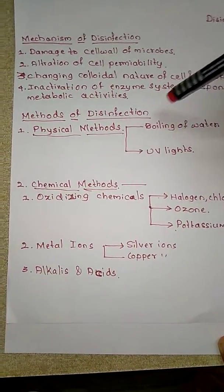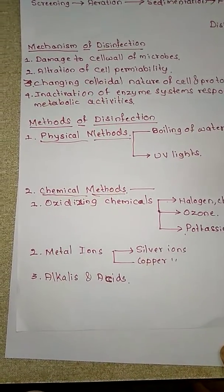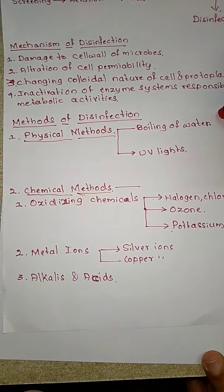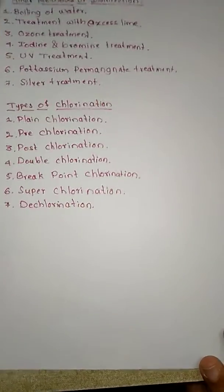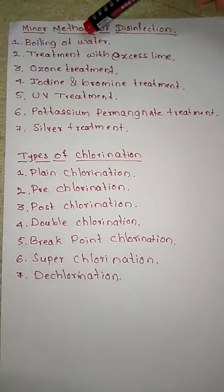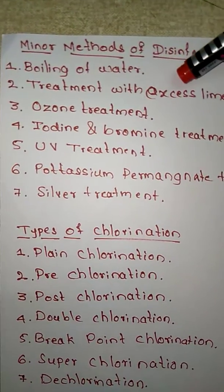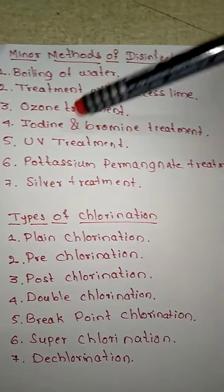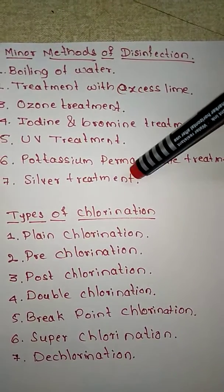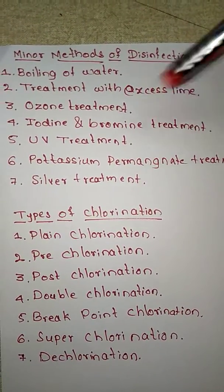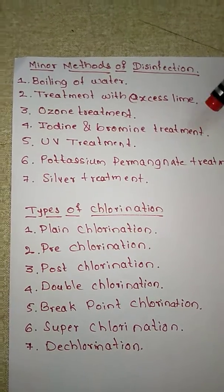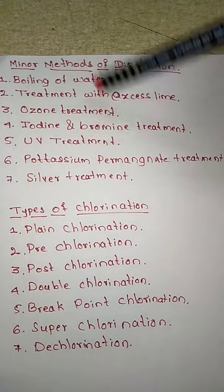All these fall under minor methods of disinfection. The minor methods include boiling of water, excess lime treatment, ozone treatment, iodine and bromine treatment, UV treatment, potassium permanganate treatment, and silver treatment. In examinations, you may be asked to explain any one of these methods.